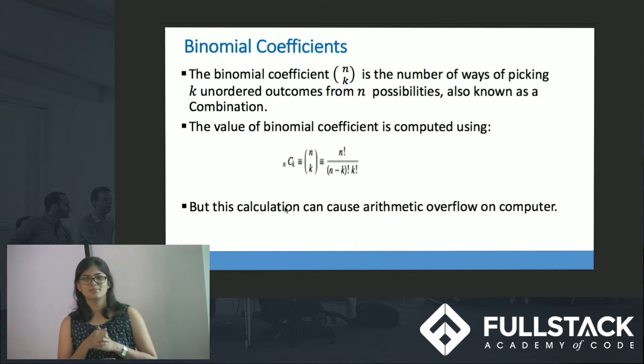Binomial coefficient n choose k is the number of ways I pick k outcomes out of n possibilities. Mathematically it is computed using a formula n factorial divided by (n minus k) factorial times k factorial.